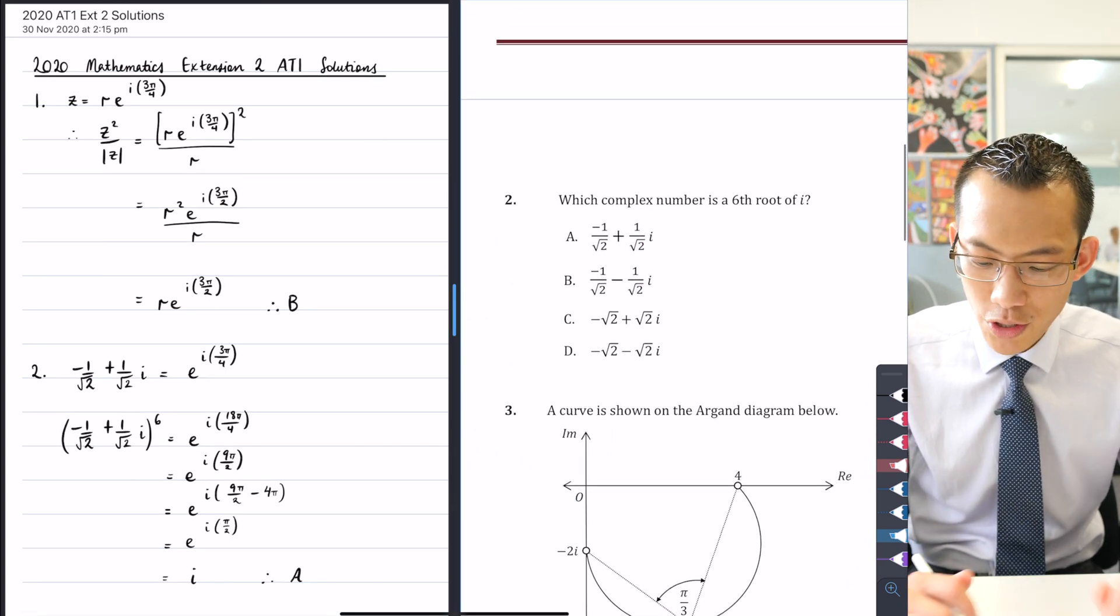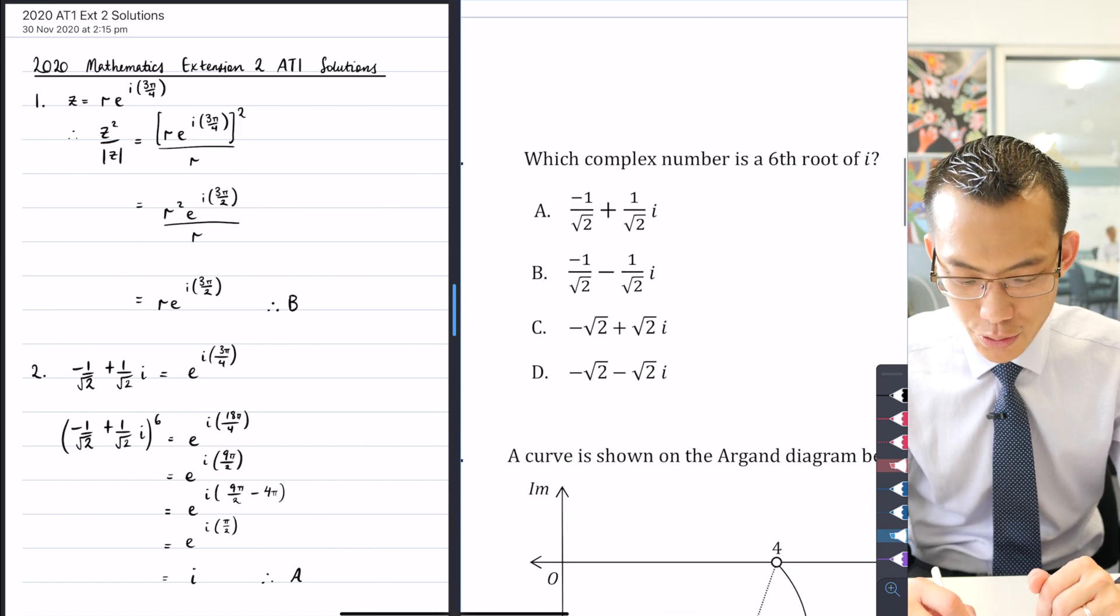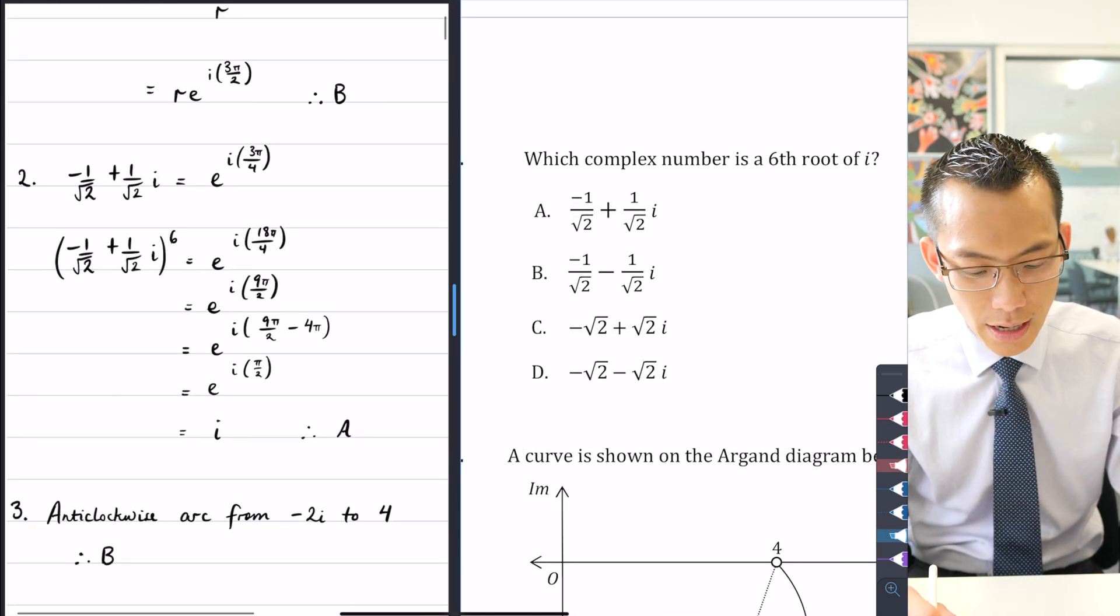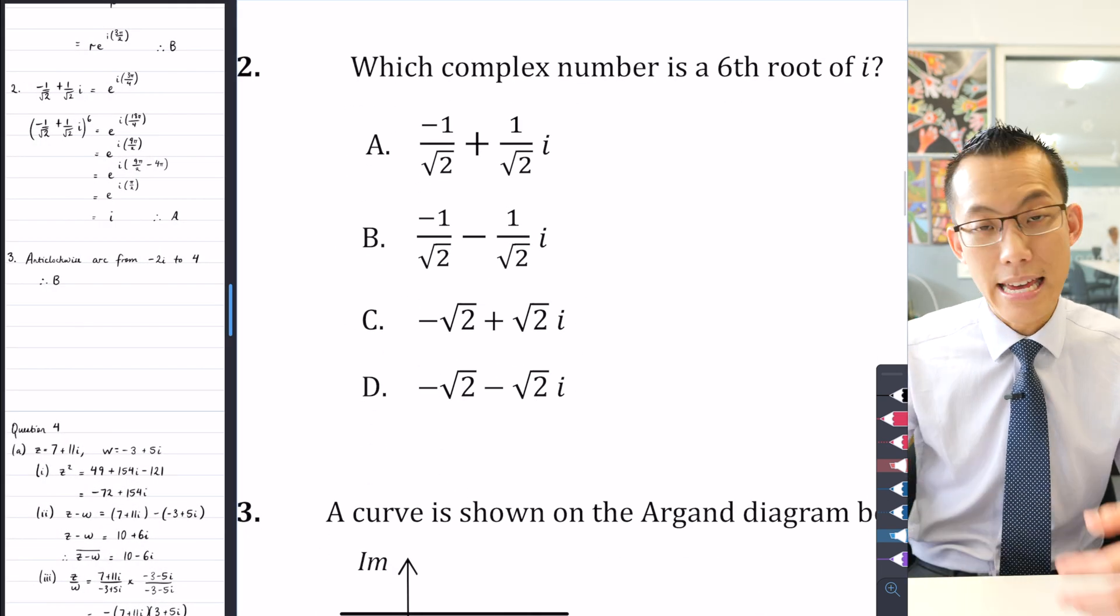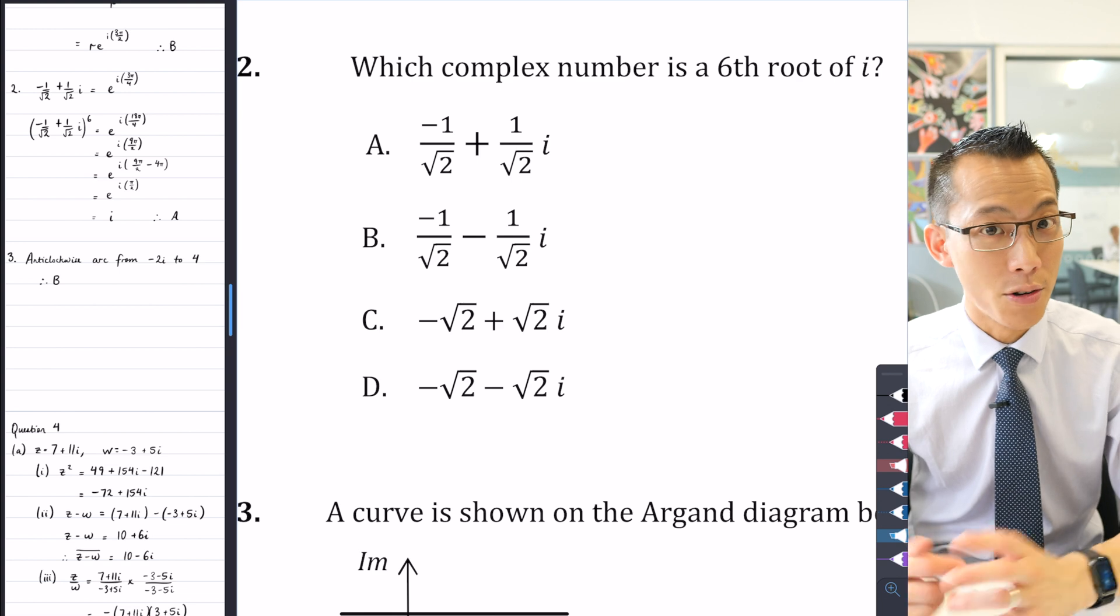Alright, so then question 2: which complex number is a sixth root of i? Now you can see over here I've gotten an answer of A, but before you get to that answer, you can actually very rapidly exclude some of the answers that are nonsensical.